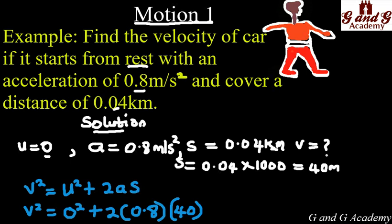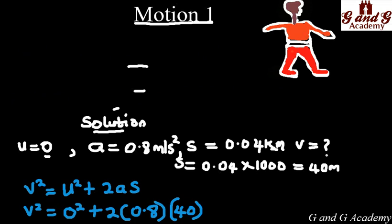Having done that, you will discover that v² equals 64, because zero squared is zero, and 2 times 0.8 times 40 gives you 64.